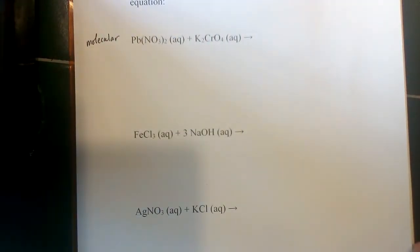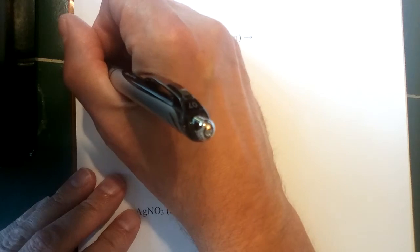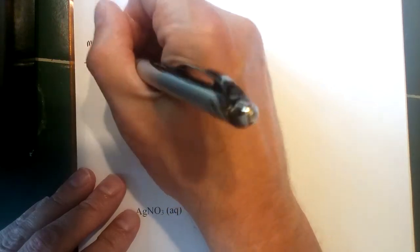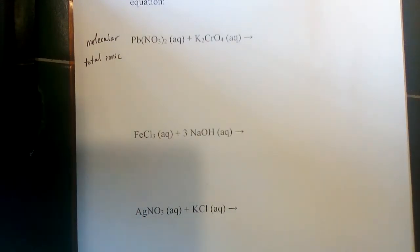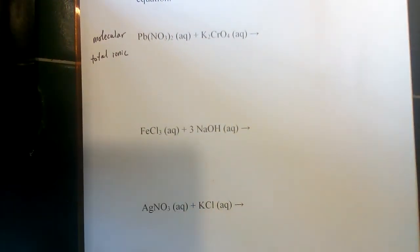What we are going to do to evaluate this reaction is we're going to write a different form of this equation called the total ionic equation, and that's going to come right below the molecular equation here on the paper. And then we're going to use the total ionic equation to derive another equation called the net ionic equation, which is also helpful for evaluating what's going on here.